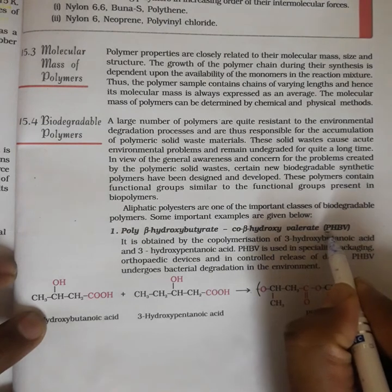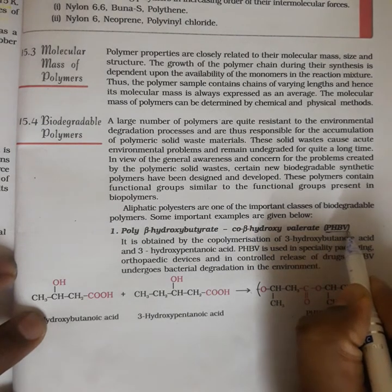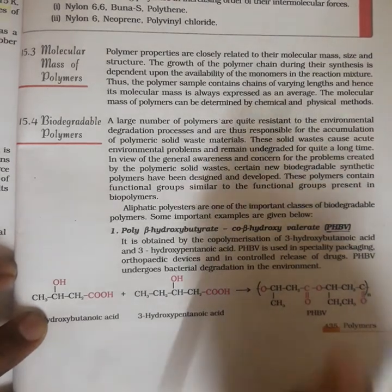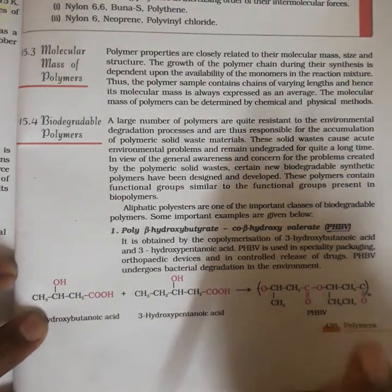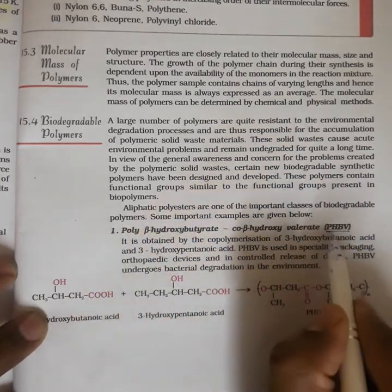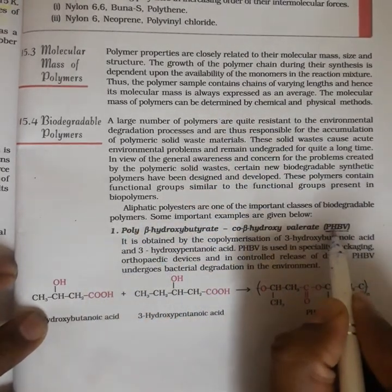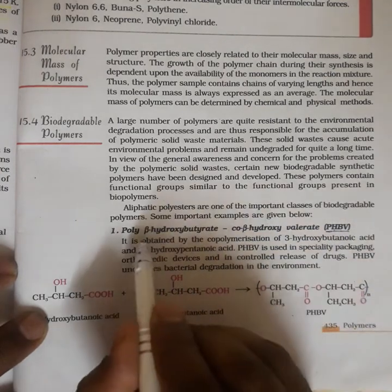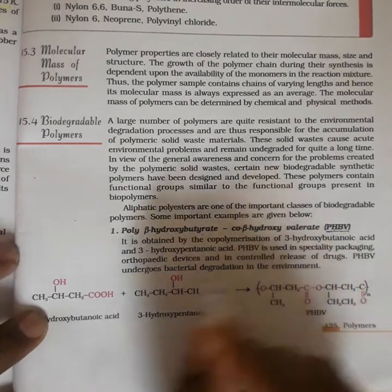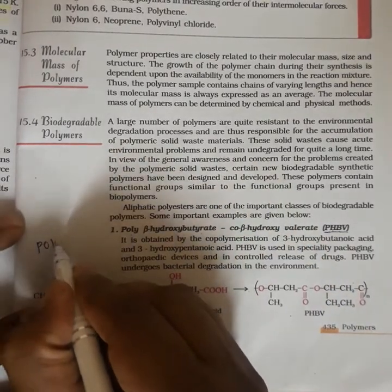The most widely used biodegradable polymer is PHBV — poly-beta-hydroxybutyrate-co-beta-hydroxyvalerate. It is a kind of polyester class of polymers.